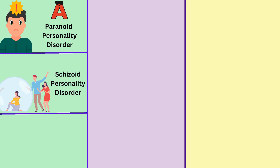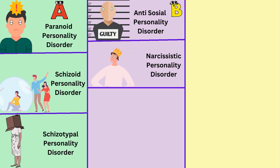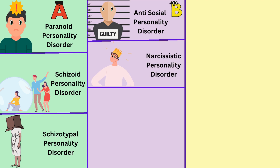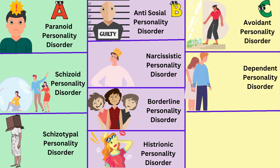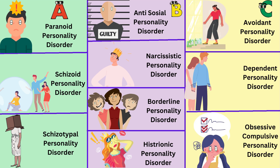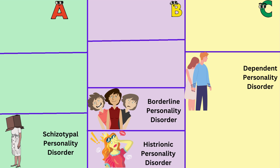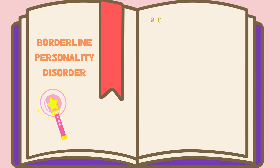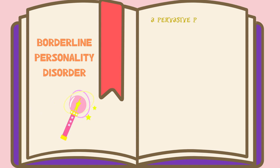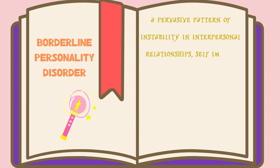There are 10 specific types of personality disorders, which the DSM-5 breaks into 3 clusters. Borderline Personality Disorder is under Cluster B. They are characterized by fear of being abandoned, poor chameleon personality, and emotional rollercoaster.